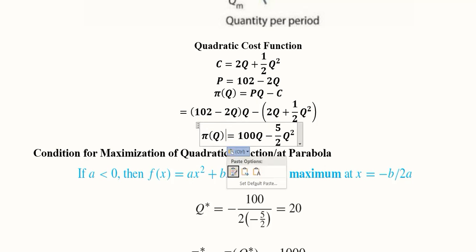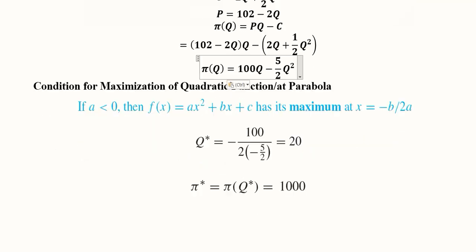Here we are. The profit function is now found. Now we have the condition for maximization of a quadratic function, which is a parabola. We should know that a quadratic function basically gives rise to a parabola which has a certain shape.